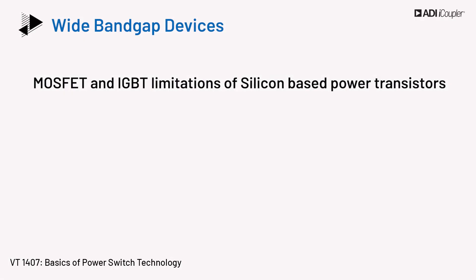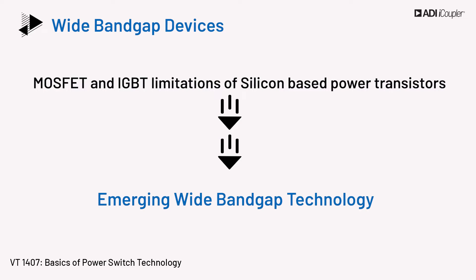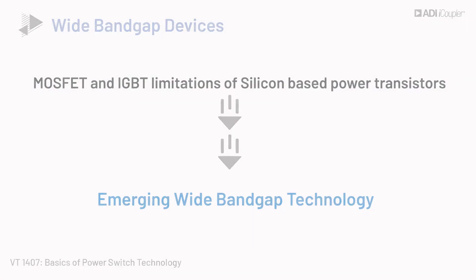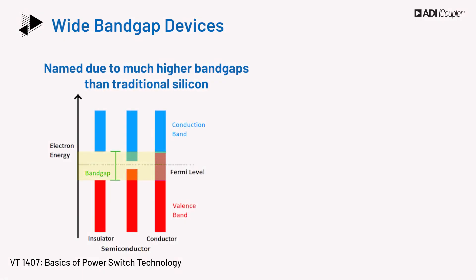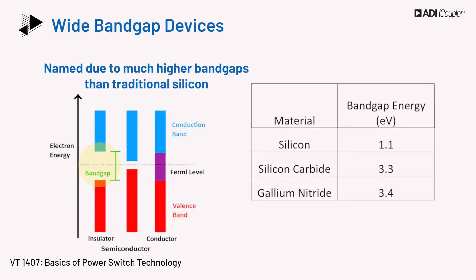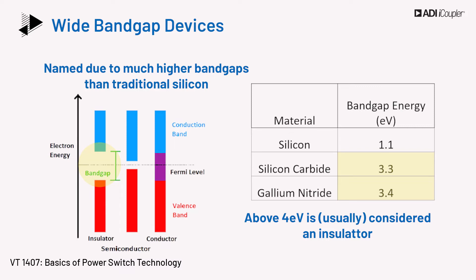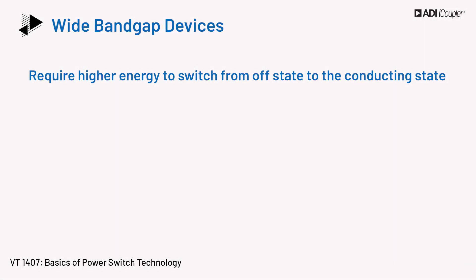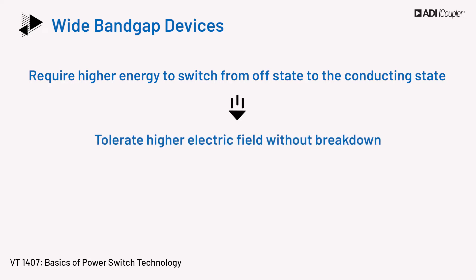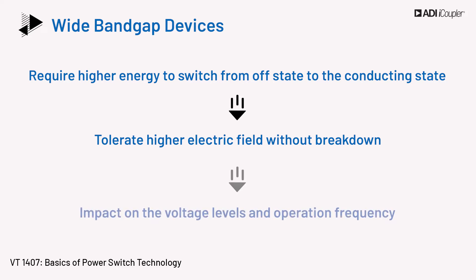We discussed that silicon-based IGBT and MOSFET have their limitations and that devices with emerging wide bandgap technology are finding application space. The wide bandgap devices are named based on the larger energy gap between the valence band and the conduction band of these materials compared to silicon. Wide bandgap materials such as silicon carbide and gallium nitride have a bandgap which is about two to three times larger than silicon. Insulators have bandgap energy above 4 eV. Wide bandgap devices require higher energy to go from the off-state to the conducting state, and thus these devices can tolerate a higher electrical field without breakdown. This has a profound effect on the voltage levels and the frequency that these devices can be operated at.